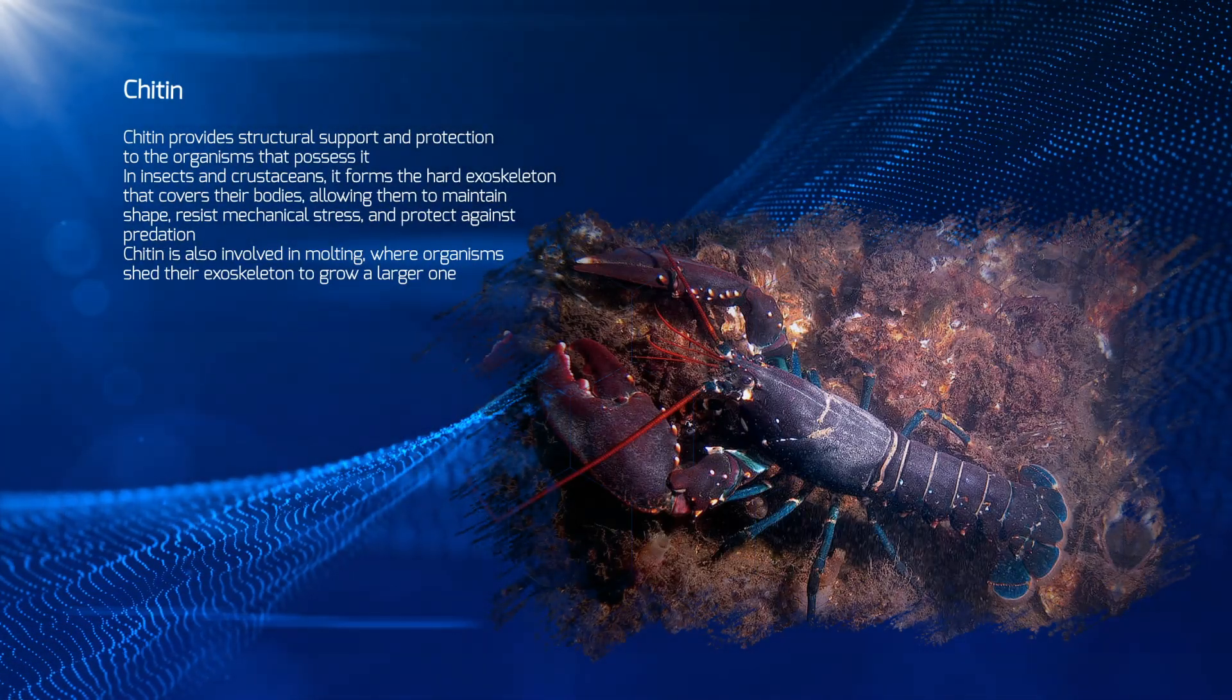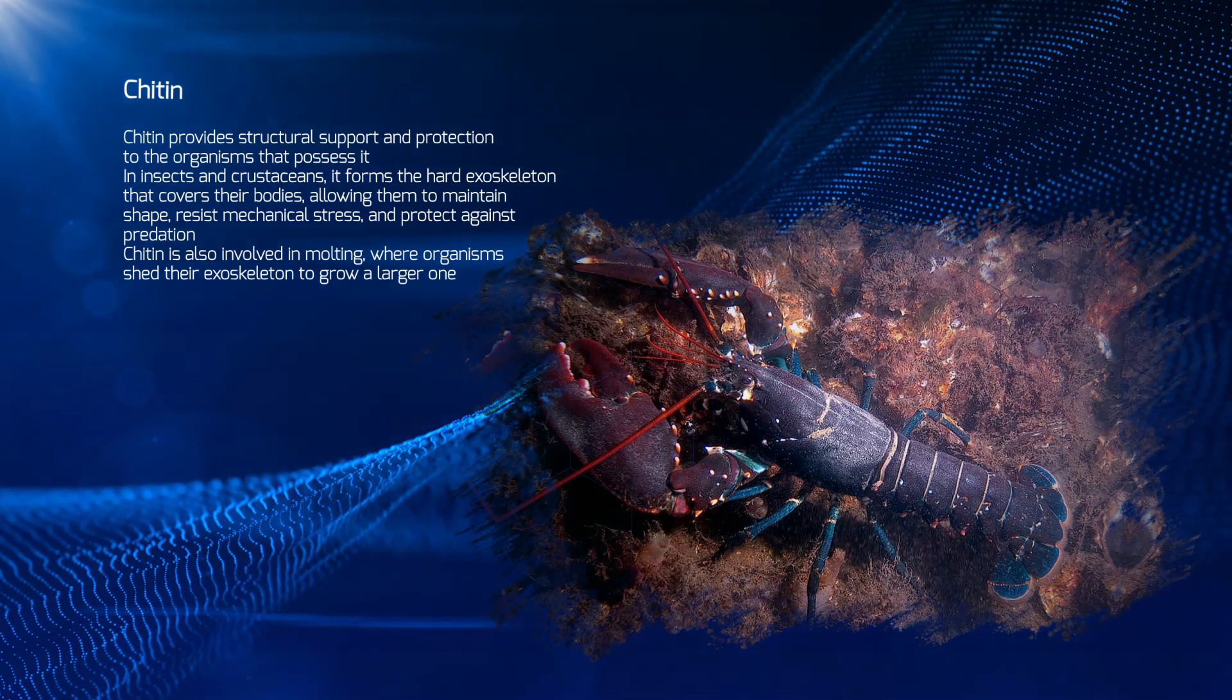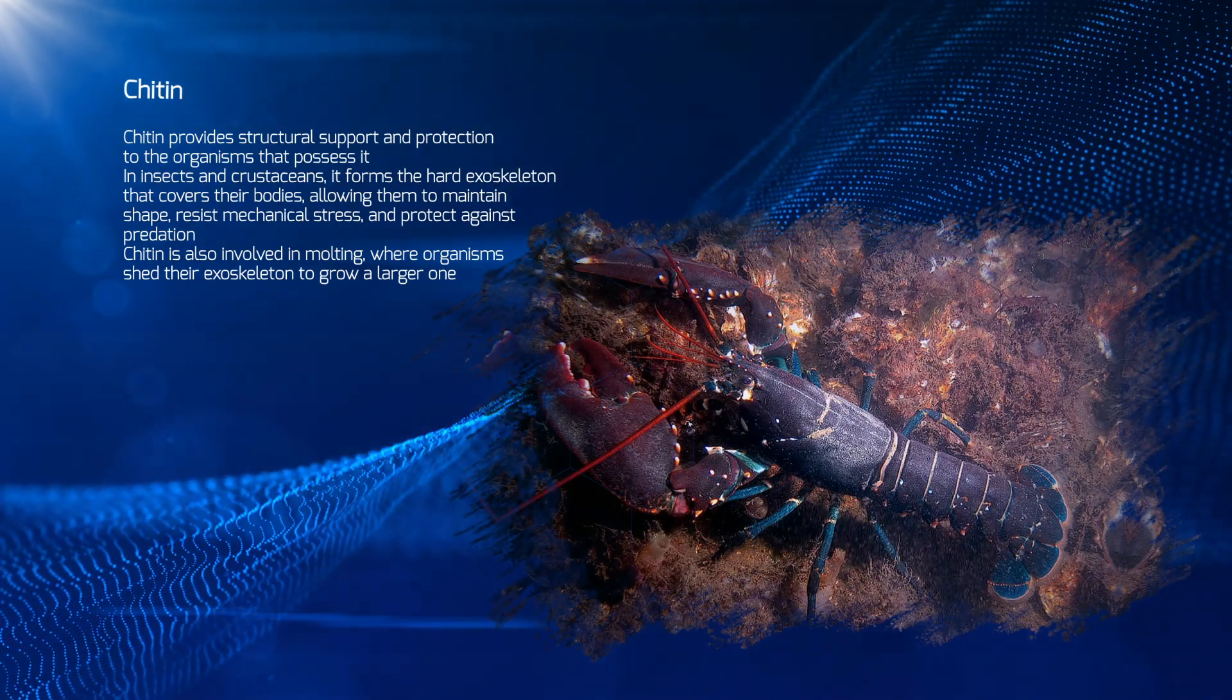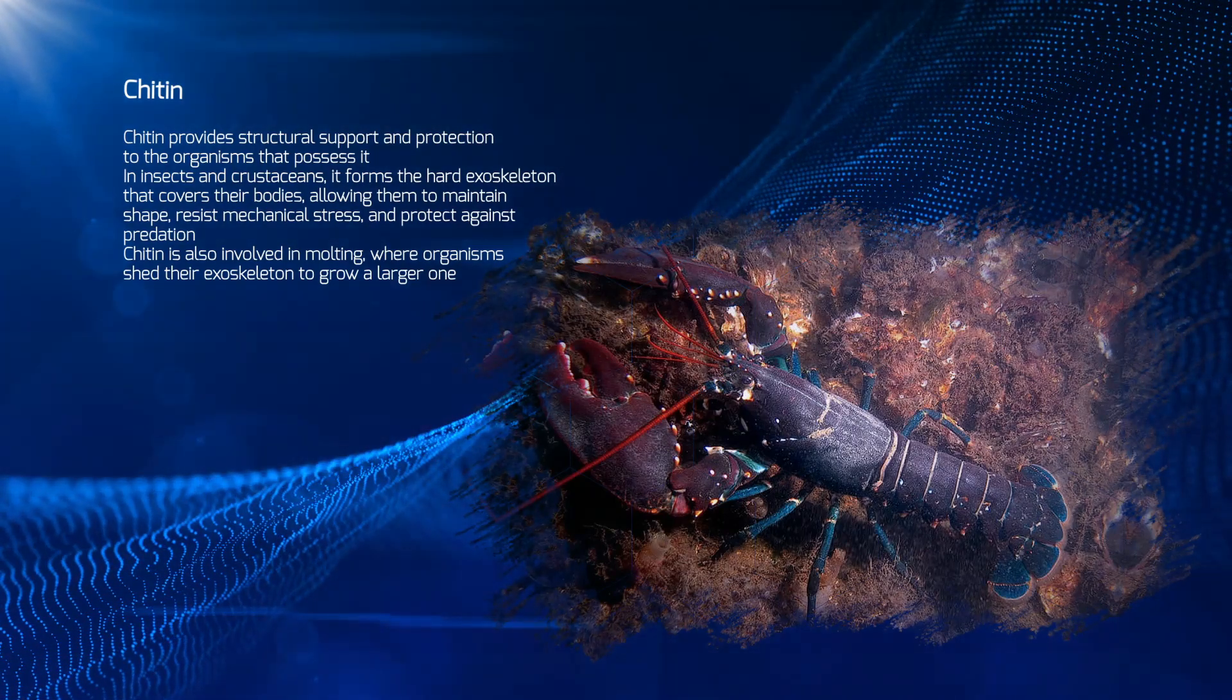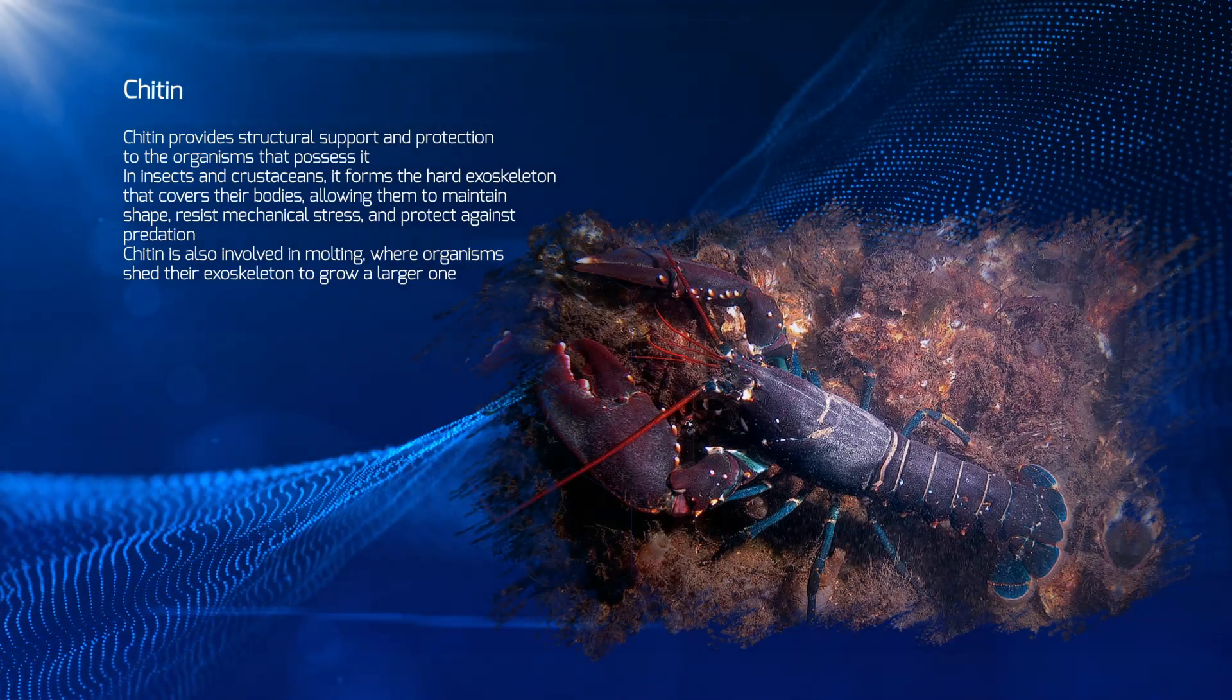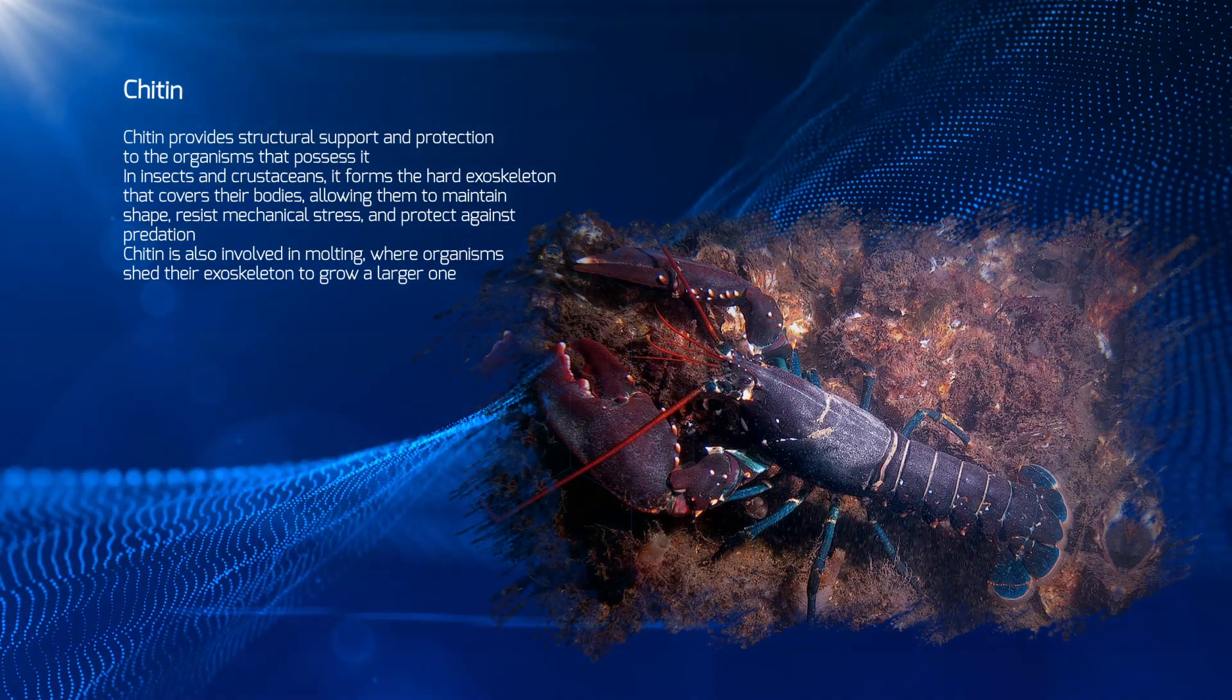Chitin provides structural support and protection to the organisms that possess it. In insects and crustaceans, it forms the hard exoskeleton that covers their bodies, allowing them to maintain shape, resist mechanical stress, and protect against predation.